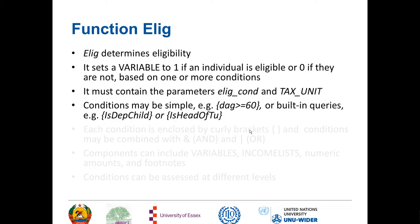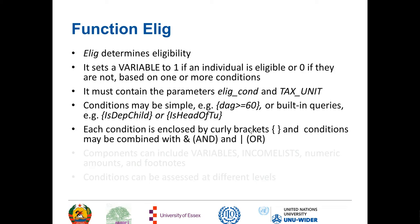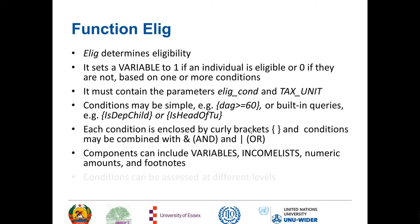Conditions may be quite simple — for example, age greater than or equal to 60, i.e. DAG >= 60, where DAG is the variable for age. Or conditions can use built-in queries such as whether an individual is a dependent child or the head of the tax unit. Each condition is enclosed by curly brackets, and conditions may be combined with AND and OR, specified using the ampersand and the vertical bar. Components can include variables, income lists, numeric amounts, and footnotes. Conditions can also be assessed at different levels.